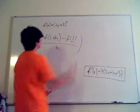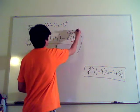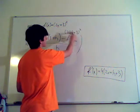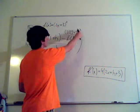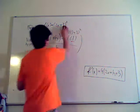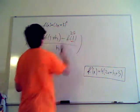So, f of 1 is the same thing as 2 times 1 plus 3 squared, which is 2 plus 3 is 5, squared is 25. So, you can just say 25.